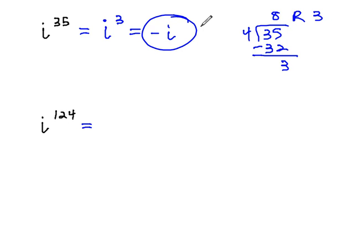So in summary, to evaluate i to some exponent, we divide the exponent by 4, and use the remainder as the new exponent on i.